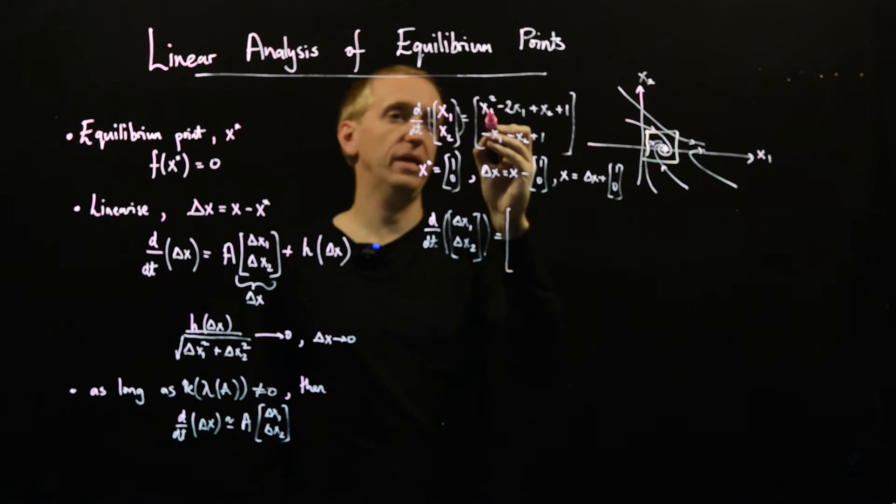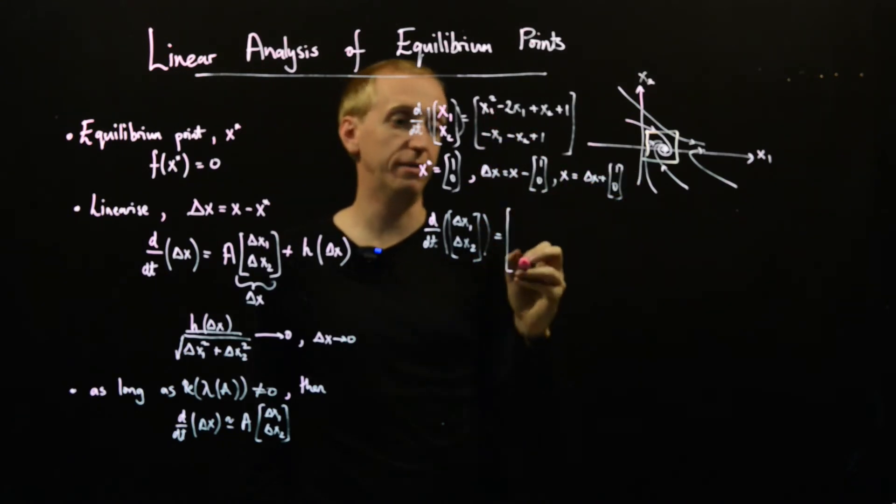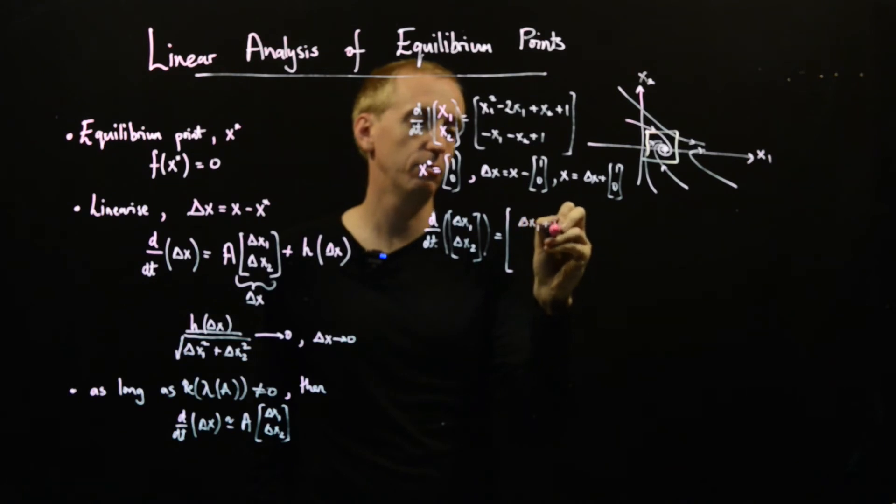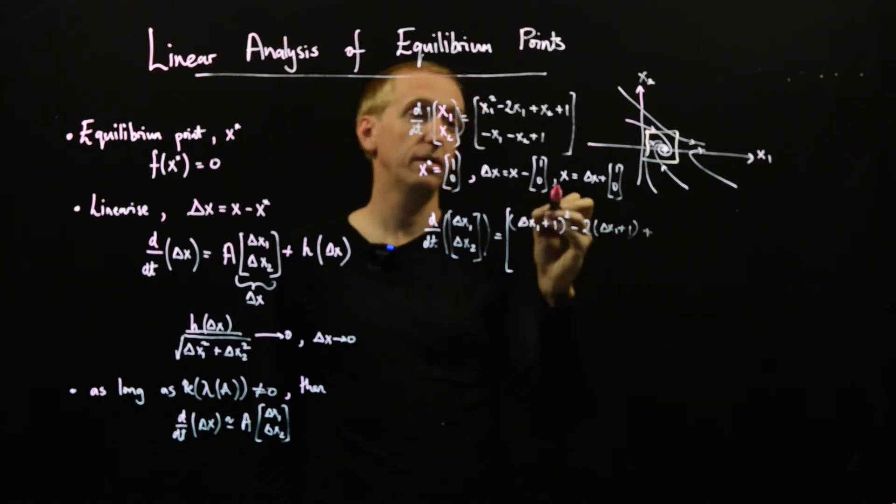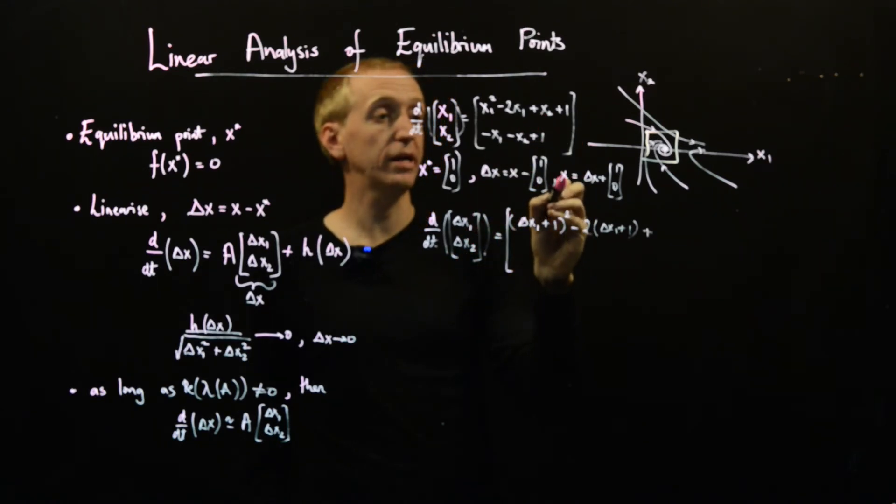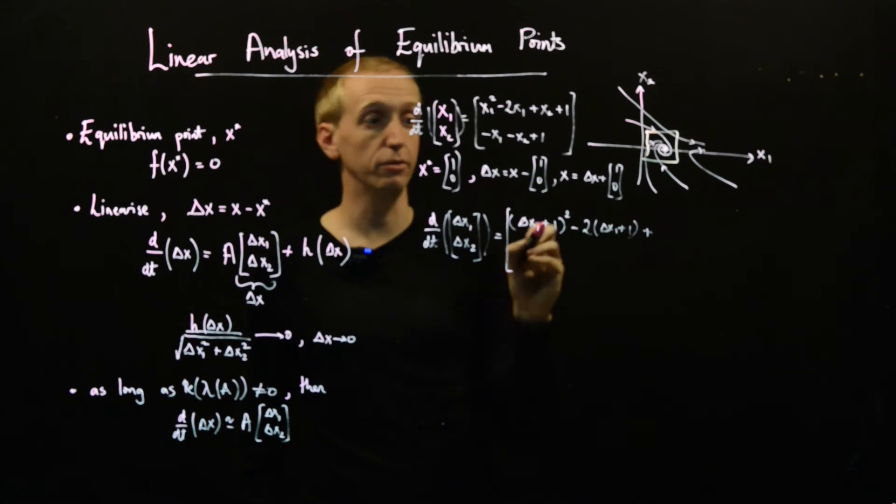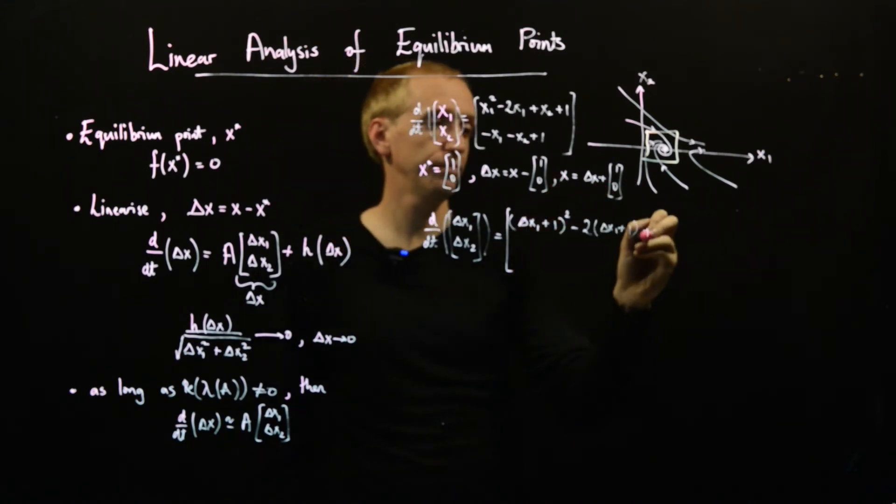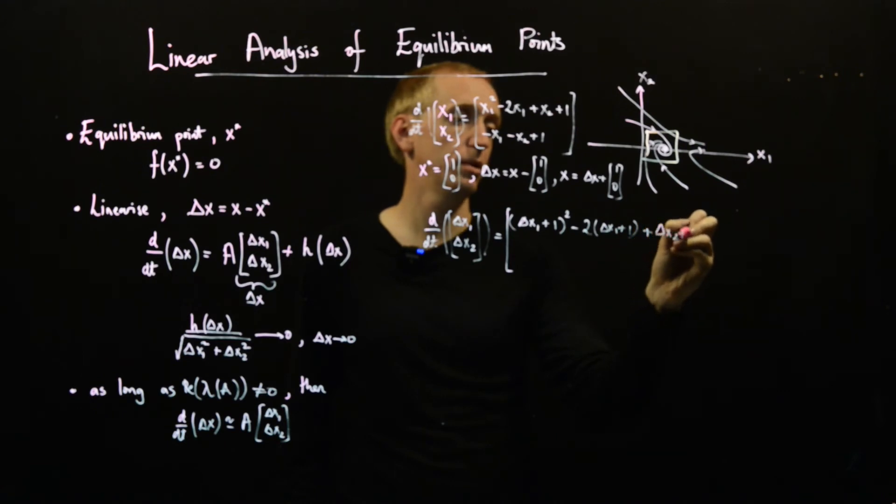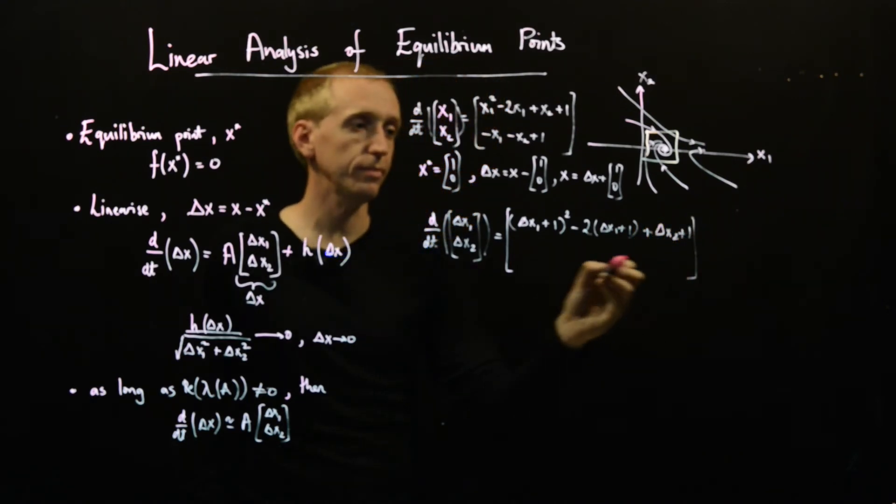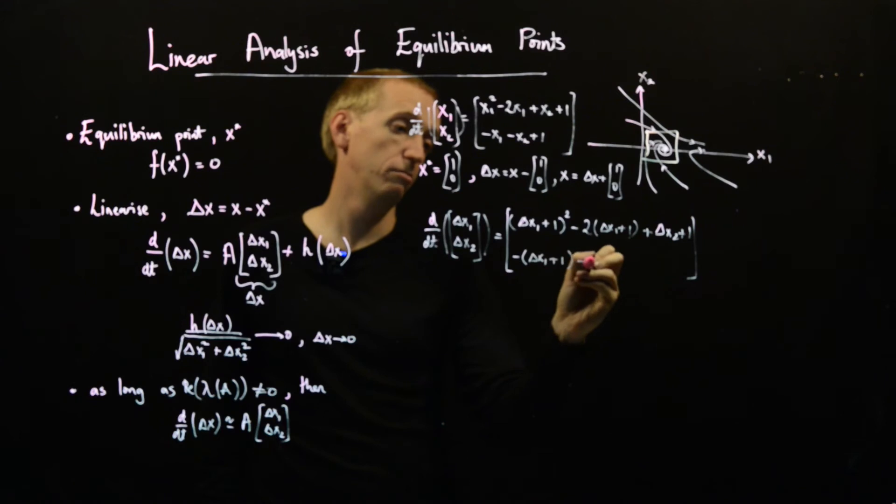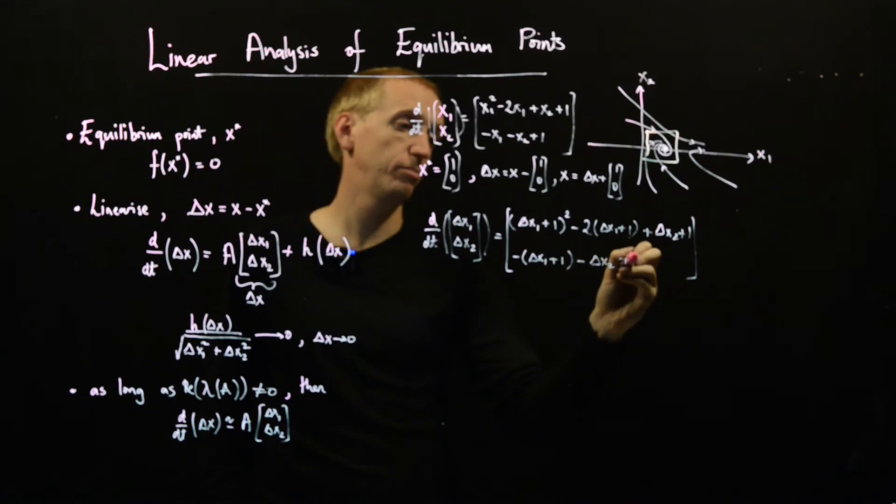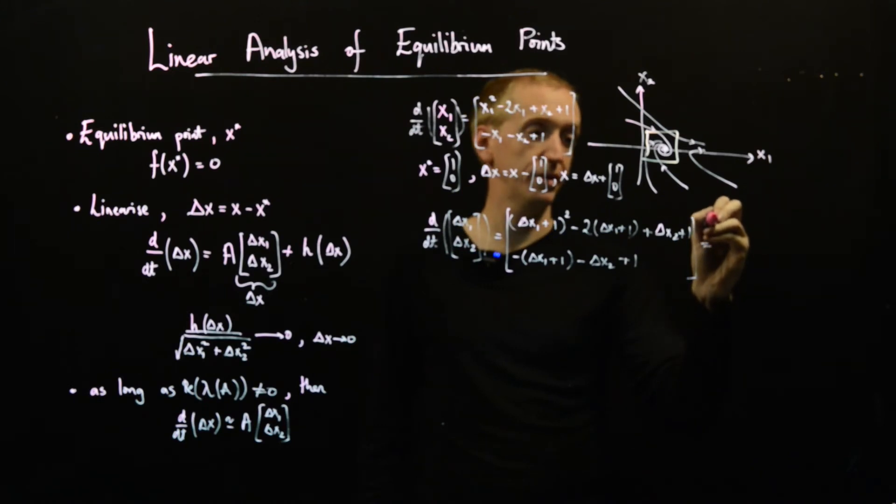So we've substituted in for x1 and x2 on the left hand side, now let's just do the same over here. So x1 becomes delta x1 plus 1. So we've got delta x1 plus 1 squared minus 2 times delta x1 plus 1 plus delta x2 plus 1. And down here we have minus delta x1 plus 1 minus delta x2 plus 1.